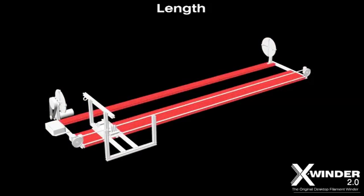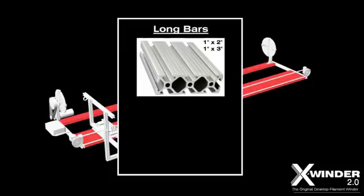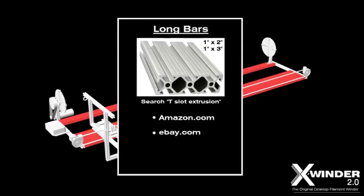The X-Winder does not ship with the long bars. This lowers the kit and shipping costs and also gives you the flexibility to make the X-Winder frame as long or as short as you'd like. The long bars should be either 1 by 2 inch or 1 by 3 inch aluminum T-slot extrusions. These extrusions can be obtained in lengths up to 20 feet long from any number of suppliers including Amazon, eBay, and 8020. For a 6-foot long X-Winder, you'll spend about 100 US dollars for the long bars.